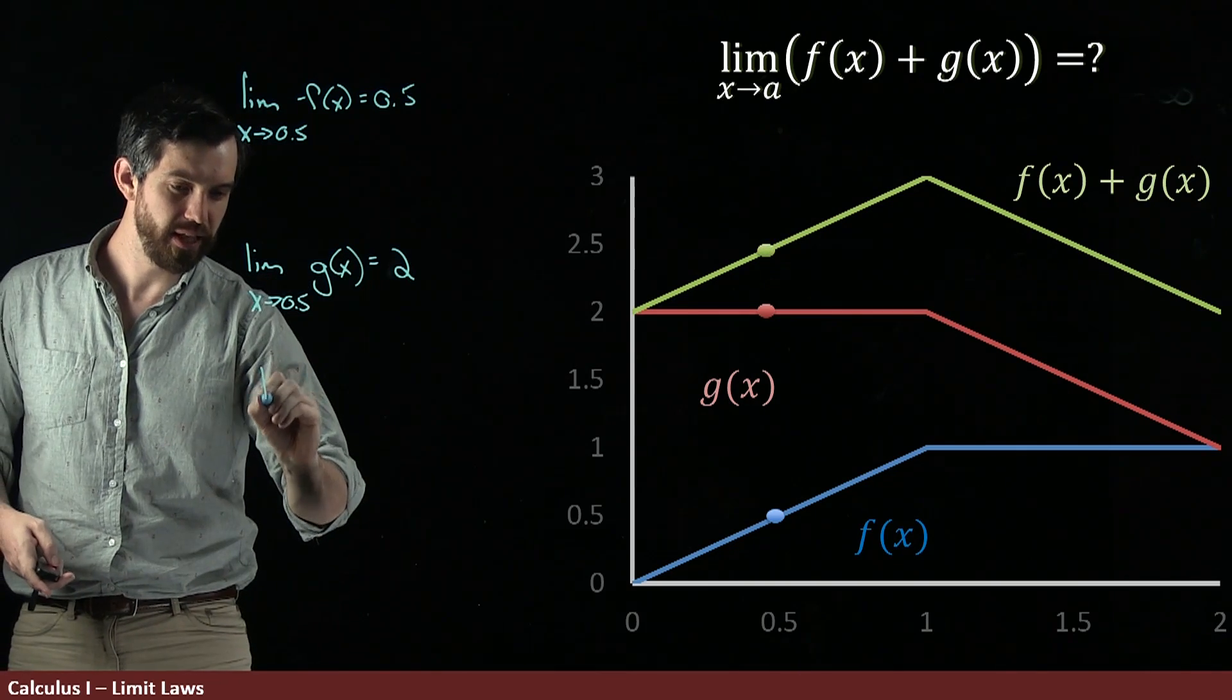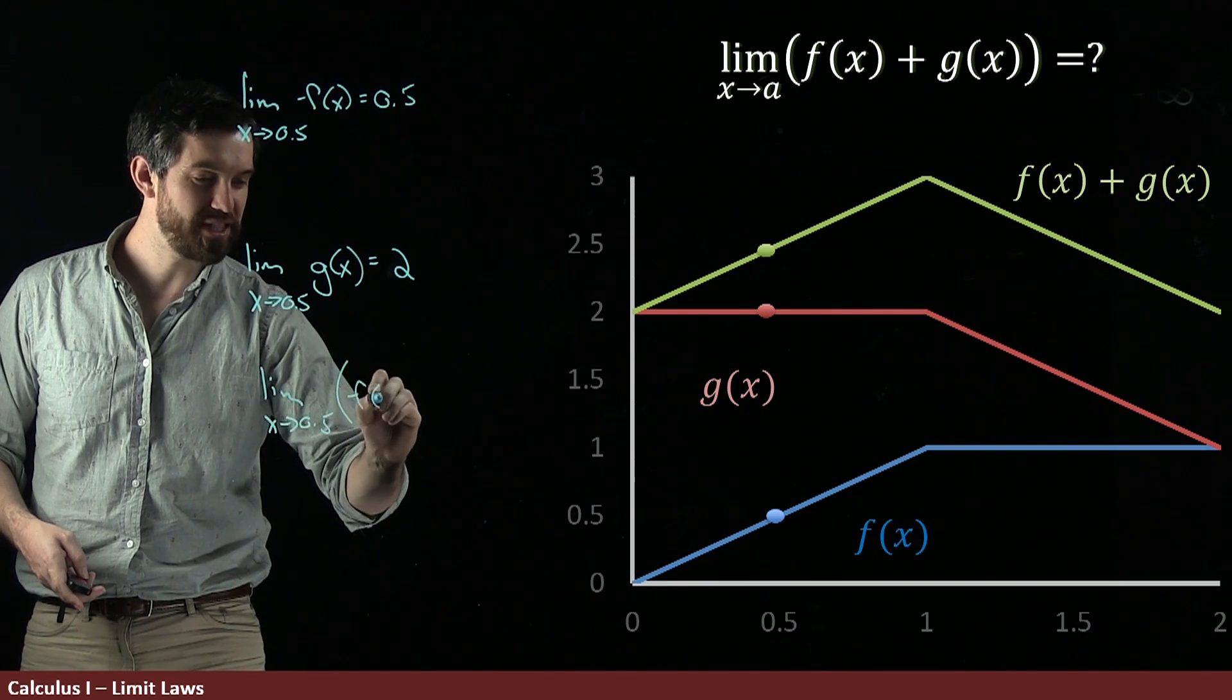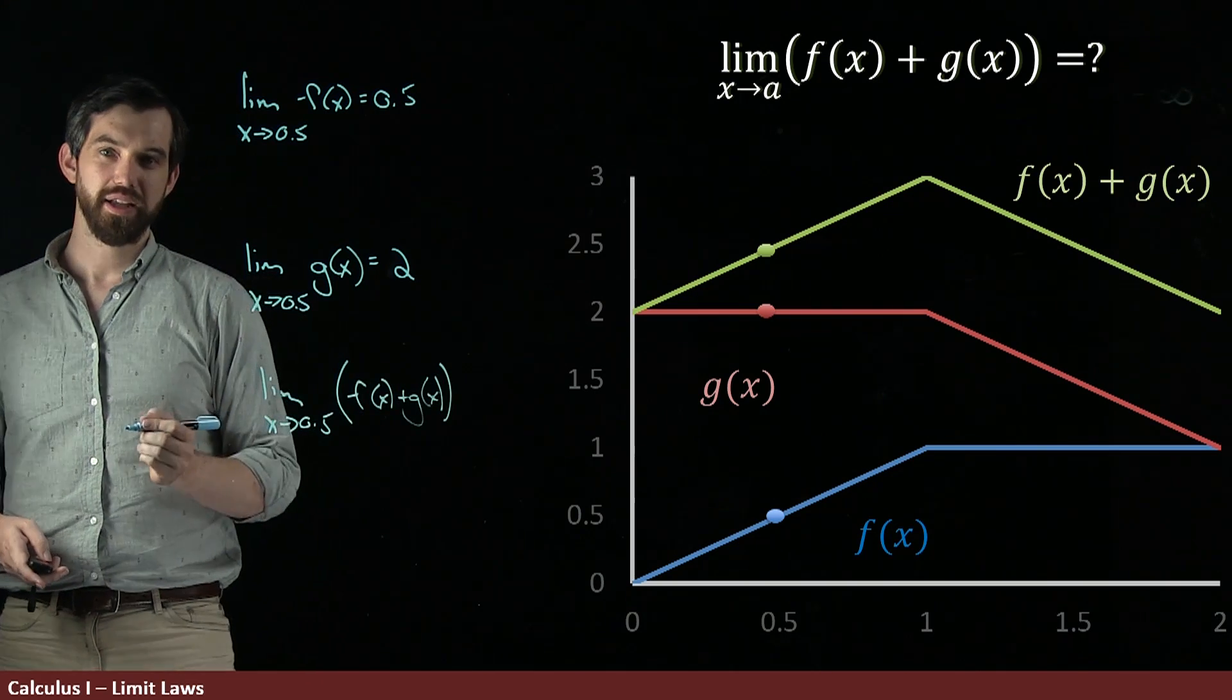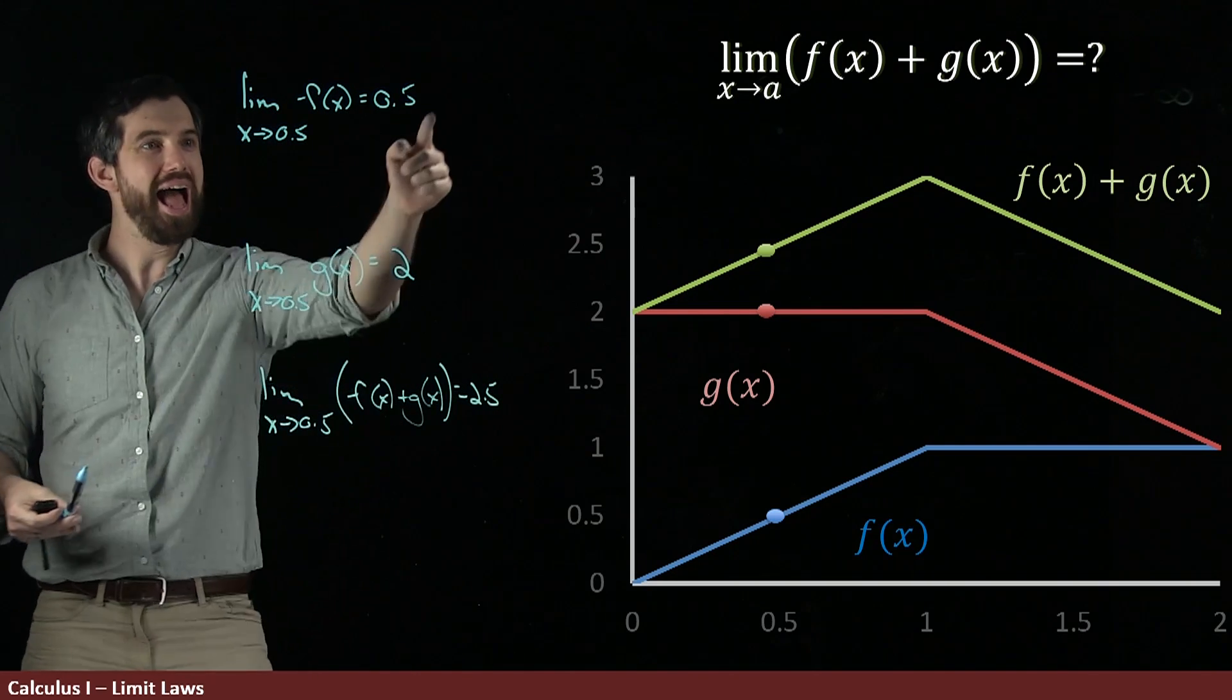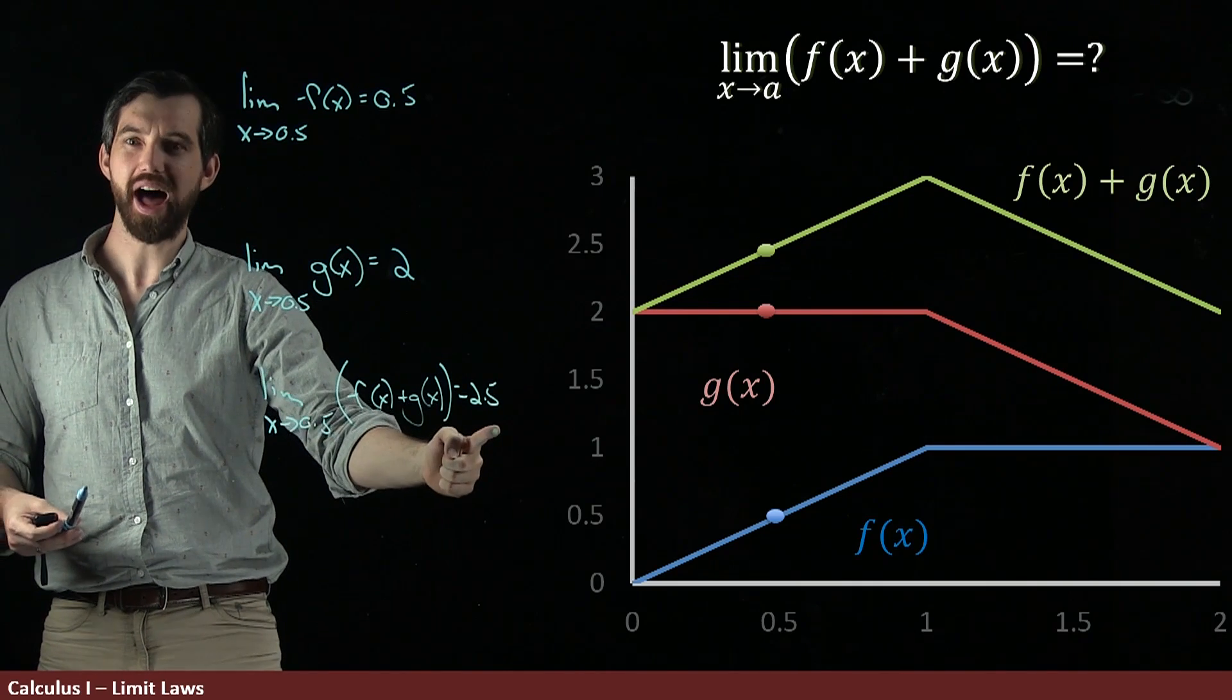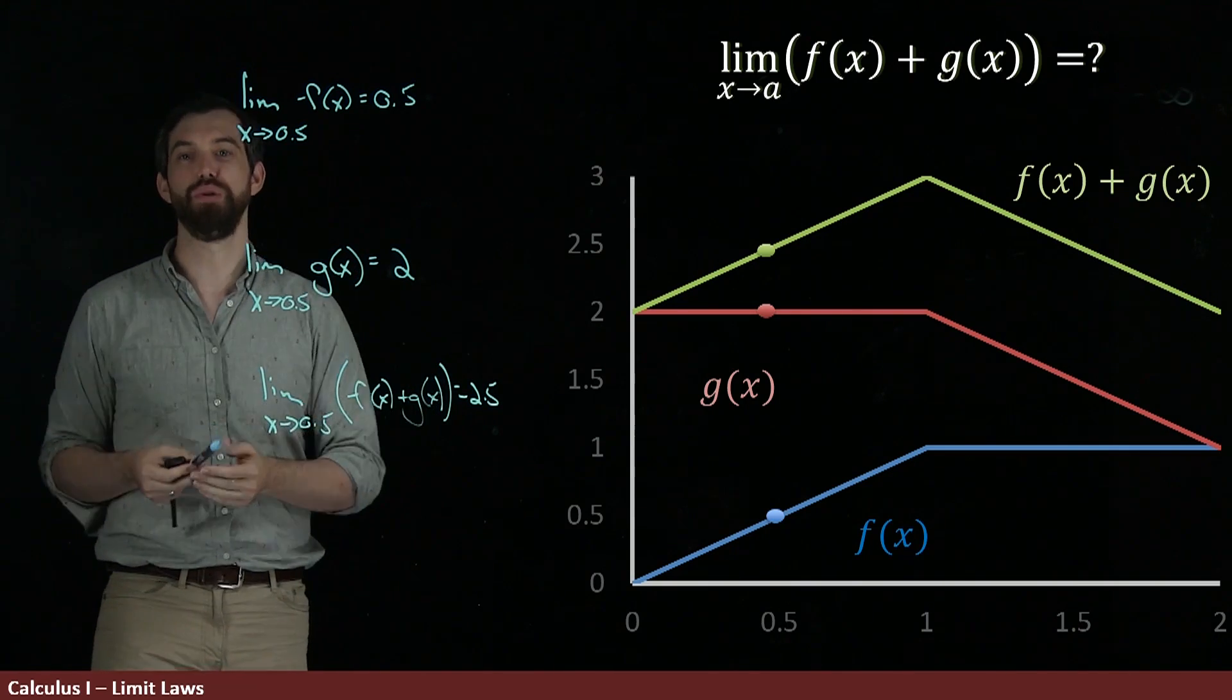That is, that the limit as x goes to 0.5 of now my f of x plus my g of x, the sum of those two functions, that what it appears to be is equal to 2.5. Now what I want you to observe is that a half plus 2 is equal to 2.5. In other words, it looks like that the limit of a sum is just the sum of the two limits.